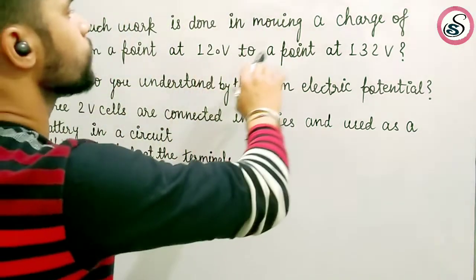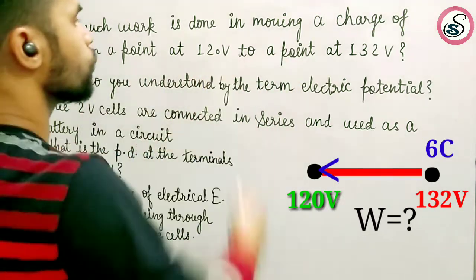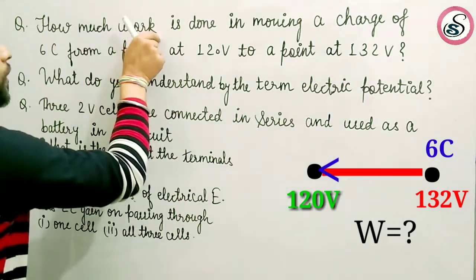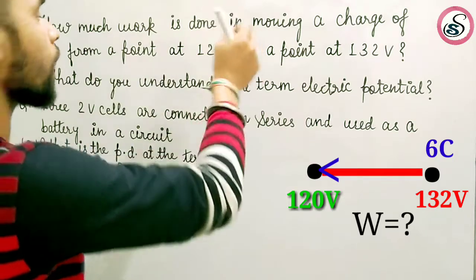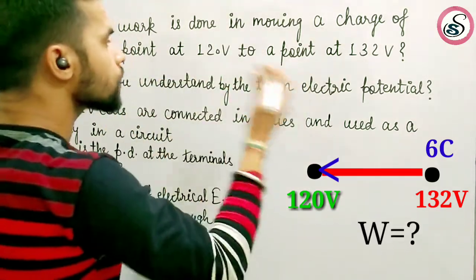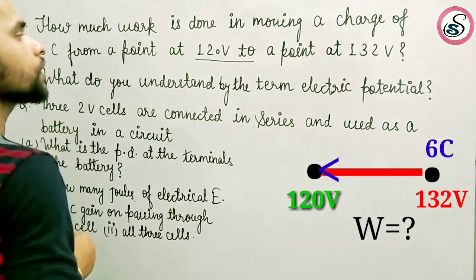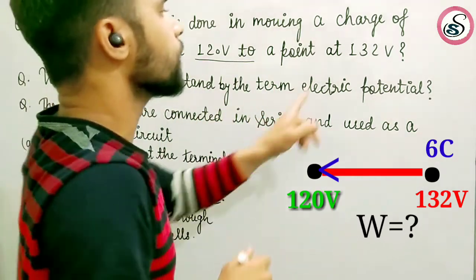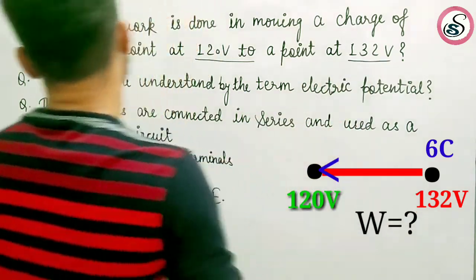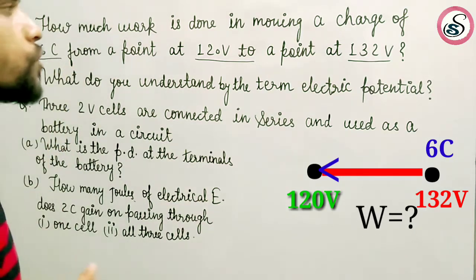So the first question is: how much work is done in moving a charge of 6 coulombs from a point at 120V to a point at 132V? Here we are asked how much work done is needed. A charge is moving from one point to another — the first point is 120V and the second point is 132V, and the charge being moved is 6 coulombs.